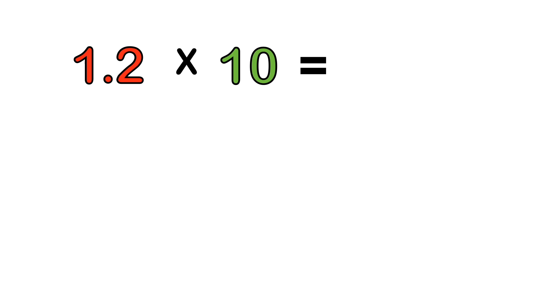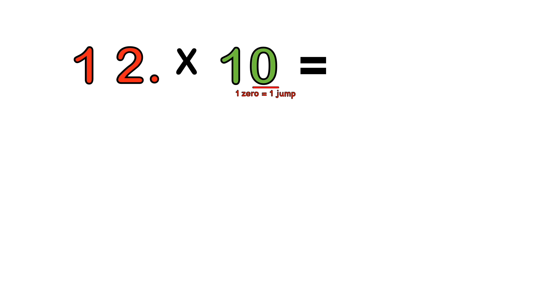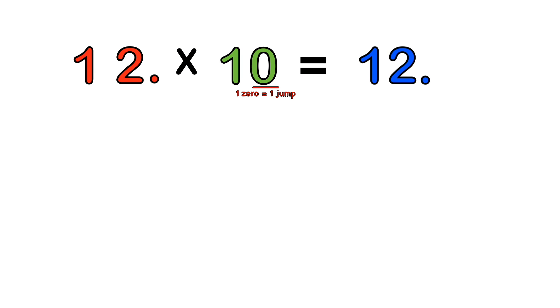But what if we have a decimal? For example, 1.2 times 10. Step one: count how many zeros we have. We have one zero, which means we need to make one jump of the decimal point to the right. So whenever we multiply, we make the decimal point jump to the right by however many zeros we have. Since we have one zero, we make one jump to the right. So we have 12 — and because we have nothing after the point, it will be 12.0.